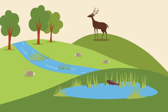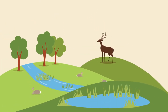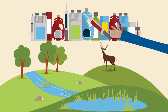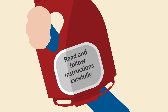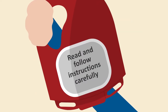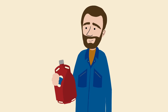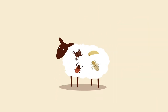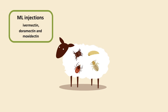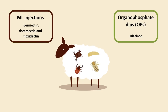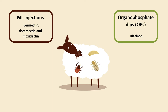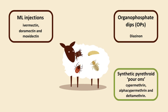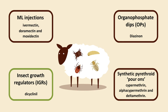For long term sustainable use of medicines, we need to ensure that we use the right products at the right time and in the right way, which includes following the guidance on disposal. There are four chemical groups available to treat ectoparasites in sheep. These are the ML injections, organophosphate dips or OPs, synthetic pyrethroid pourons and the insect growth regulators, IGRs.